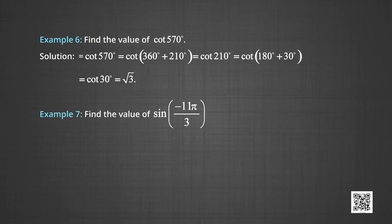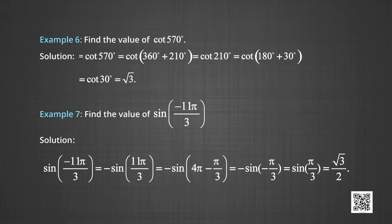In example 7, we find the value of sin(−11π/3). sin(−11π/3) = −sin(11π/3), since sin(−θ) = −sin θ. Now, −sin(11π/3) = −sin(4π − π/3) = −(−sin(π/3)) = sin(π/3) = √3/2. Therefore, sin(−11π/3) = √3/2.